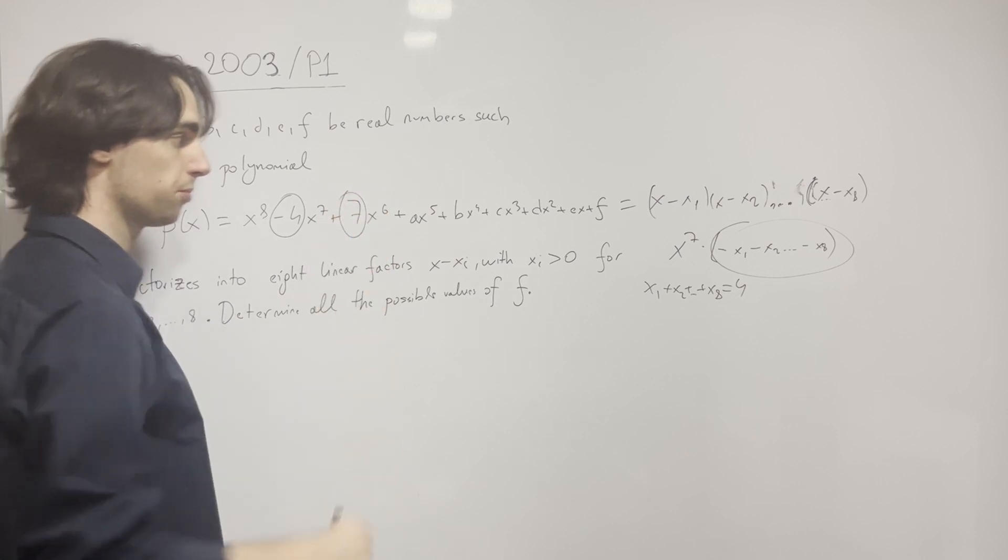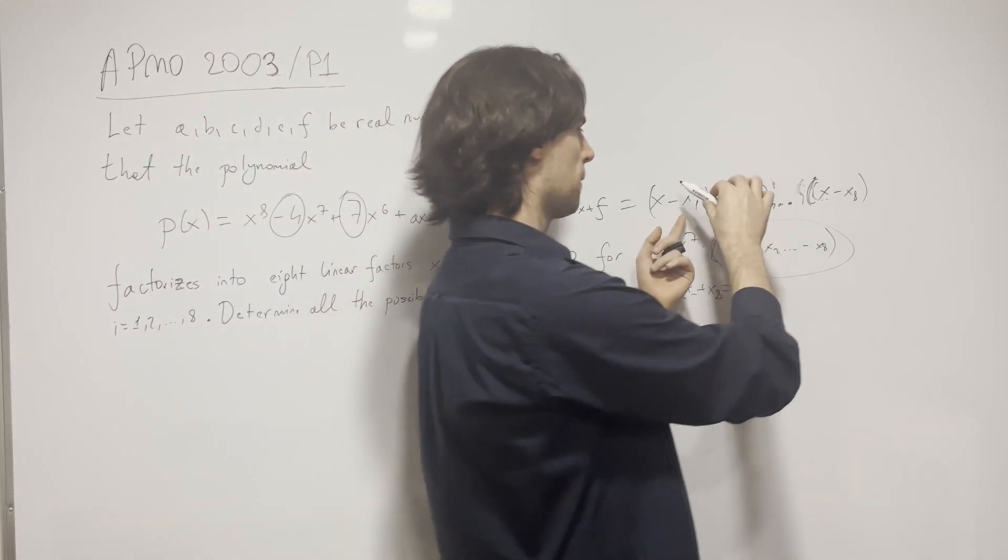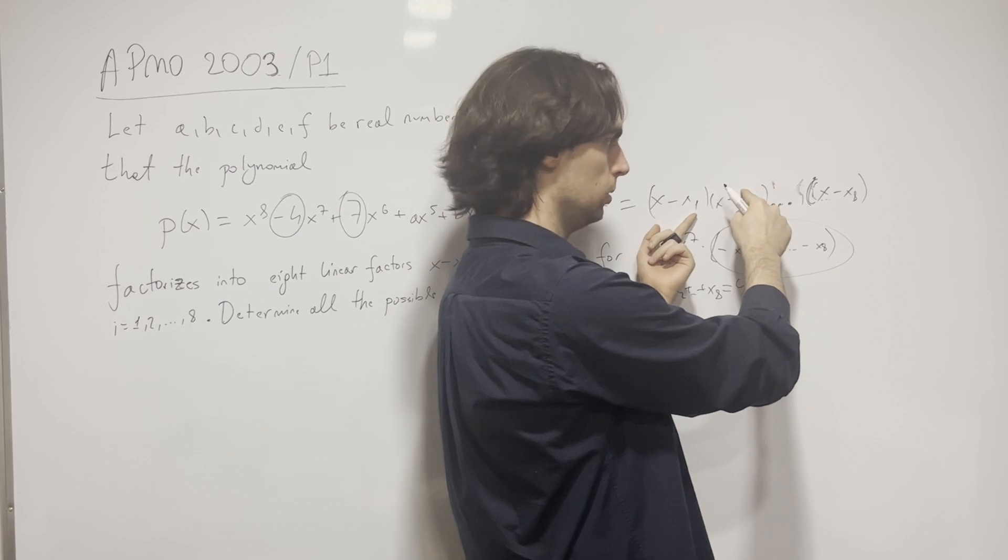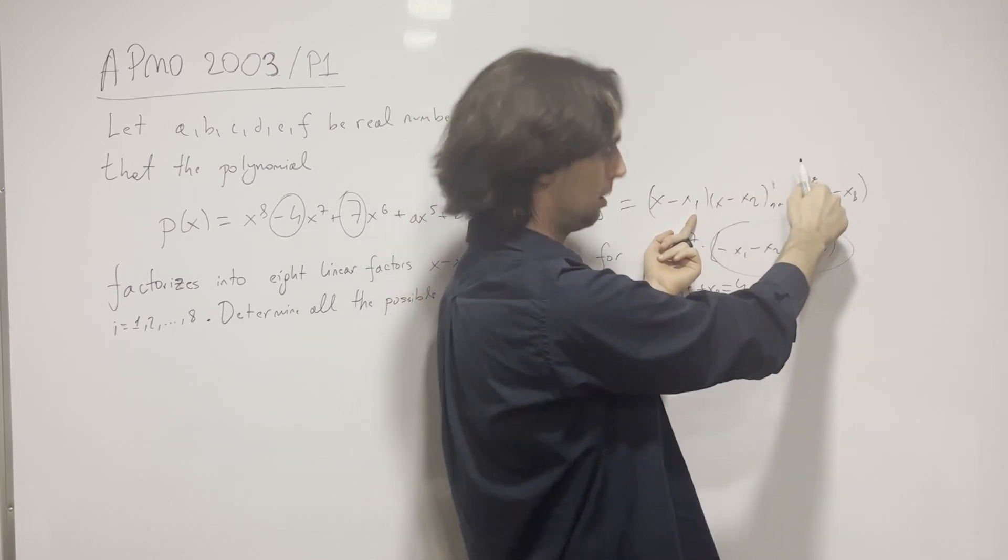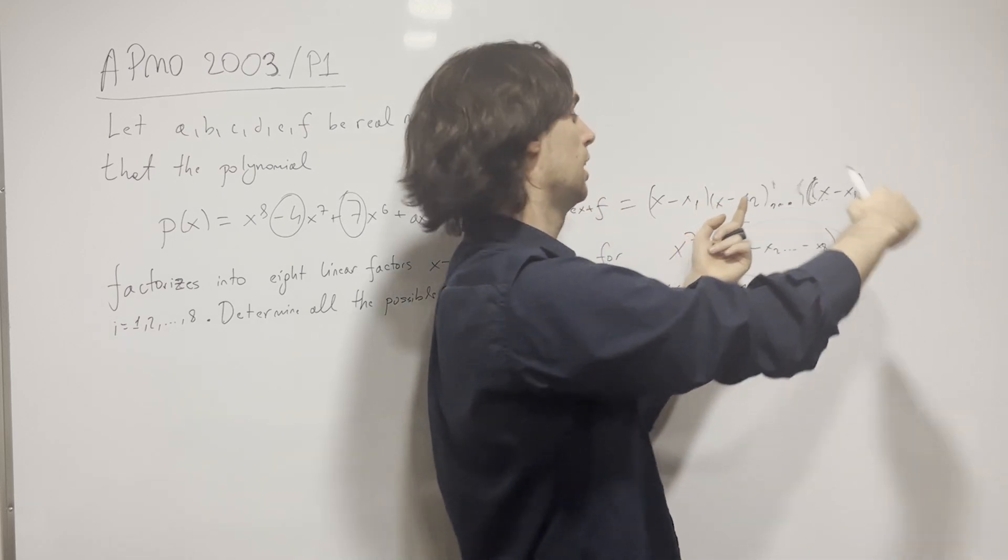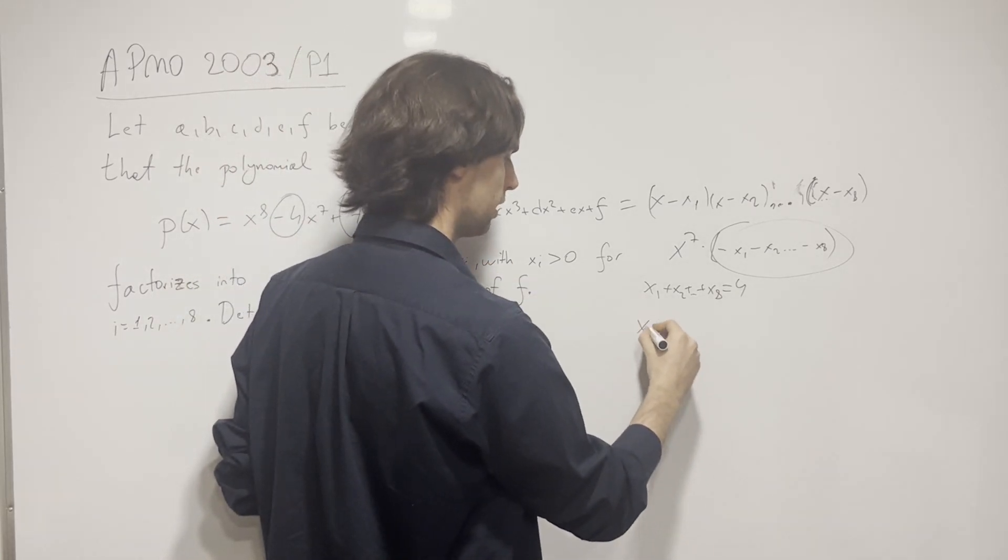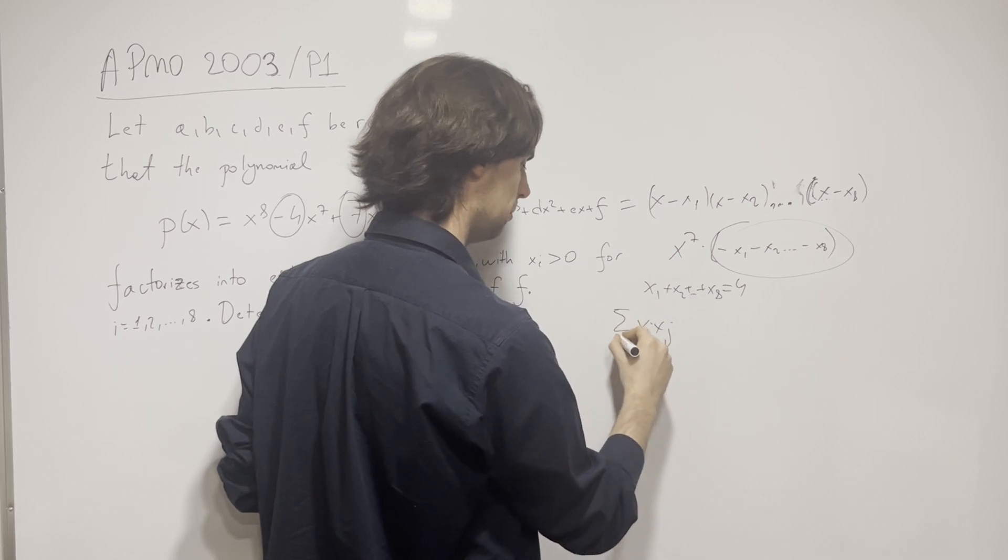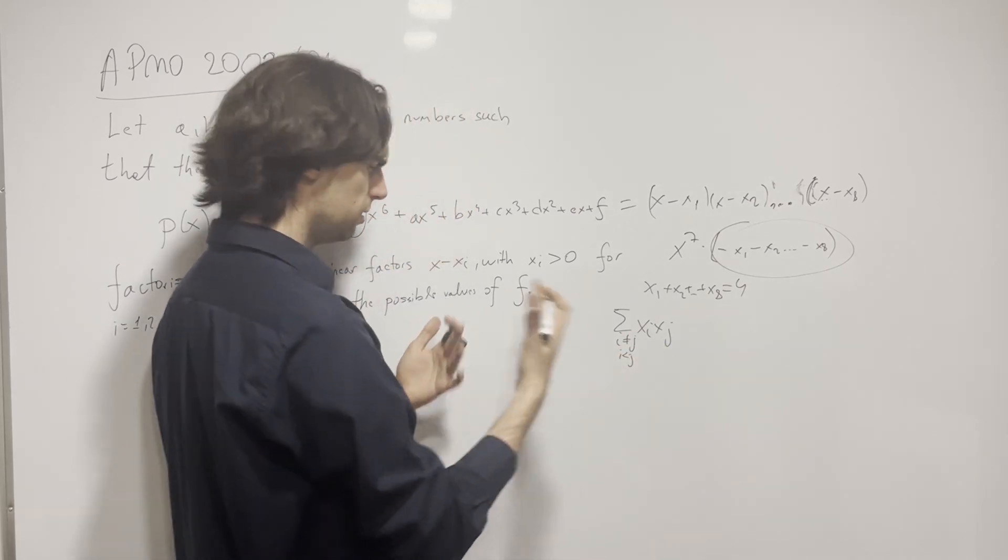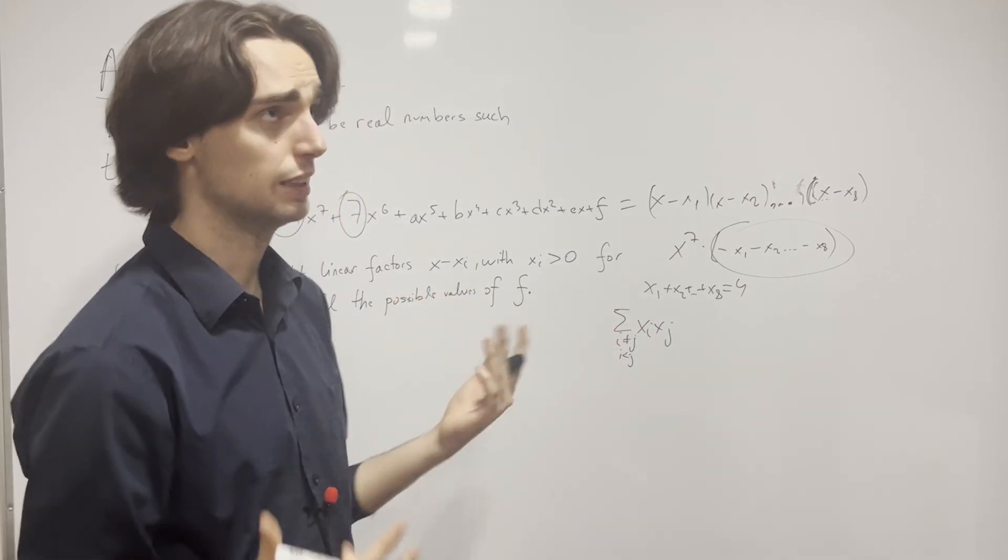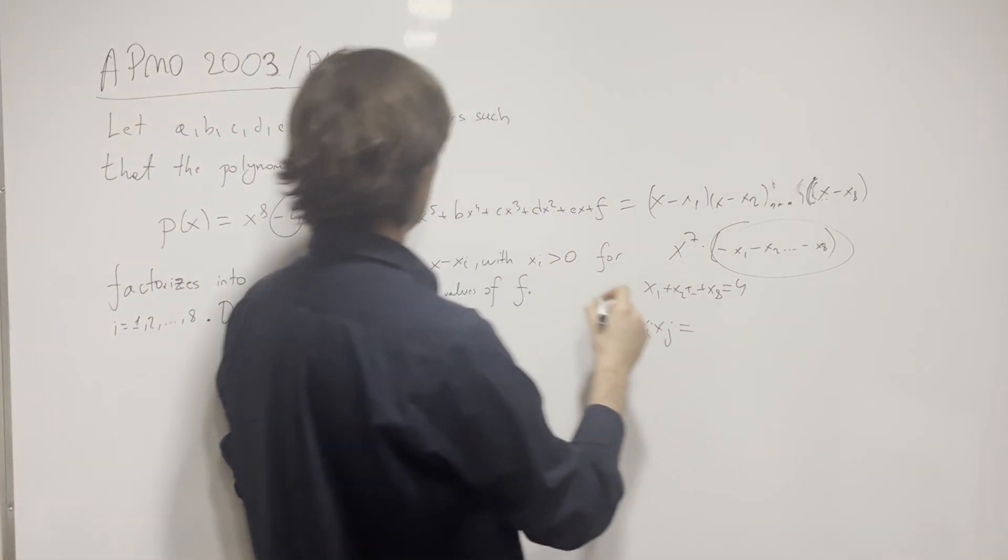And furthermore for the coefficient next to x^6, how do we get that? It's combinations: x1 times x2, then x1 times x3, x2 times x3—all the possible combinations. So we have the sum of xi times xj for i < j, which equals 7.